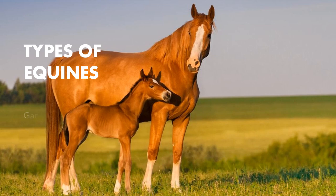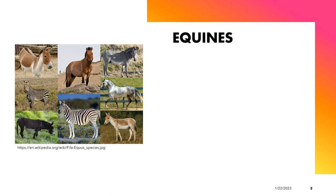Welcome to our lecture on the definition of equines and the different types of equines. So what are equines? When used as an adjective, according to the Merriam-Webster Dictionary, this relates to or resembles a horse or a closely related animal. According to the Cambridge Dictionary, equine is a term that is connected with horses or appearing similar to a horse.